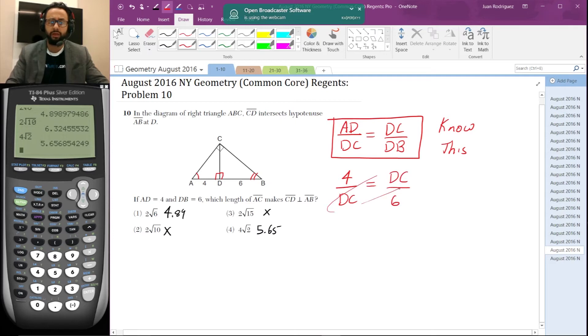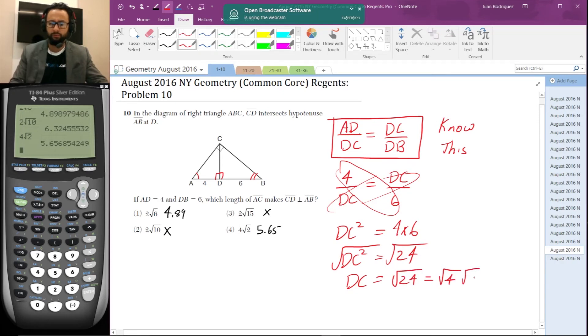And then we use cross multiplication to get DC. So DC squared, DC times DC is equal to four times six. So DC squared is equal to 24. Take the square root of both sides. And we get DC is equal to positive square root of 24, which is equal to the square root—24 has a factor that's a perfect square, square root of four times square root of six, which is equal to two square root of six.